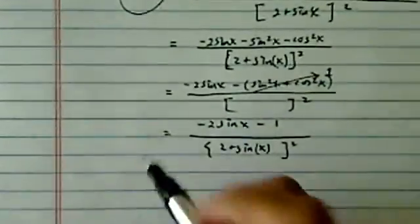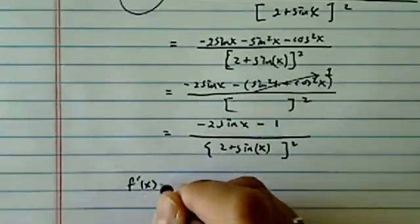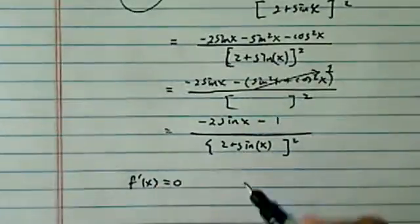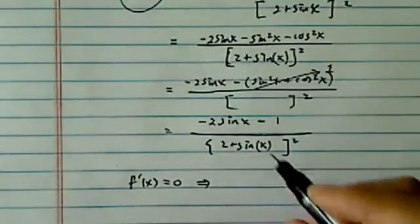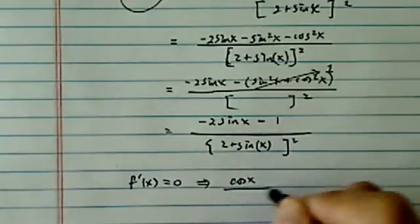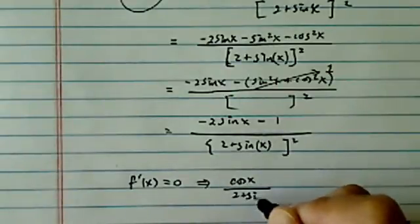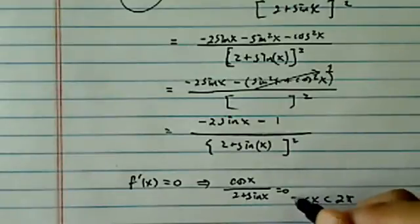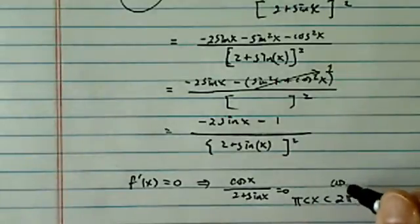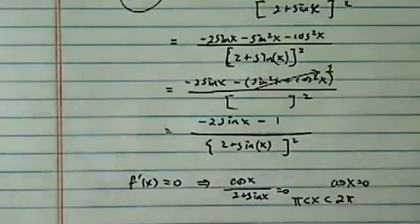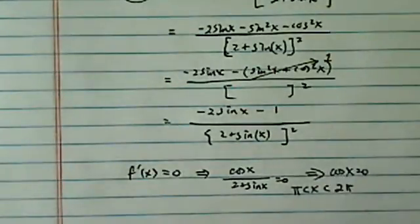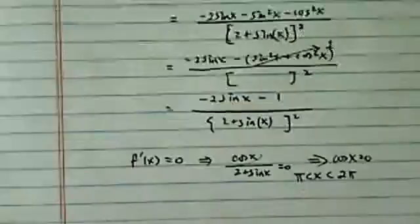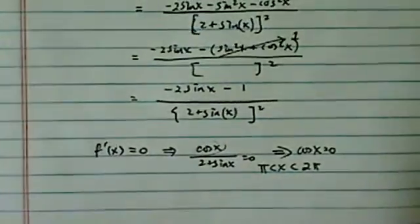That gives us the extreme value. So setting this one equal to 0, which means cosine x times 2 plus sine x equal to 0. Since x was restricted between pi and 2 pi, that means cosine x equal to 0. So the top, we set it equal to 0.